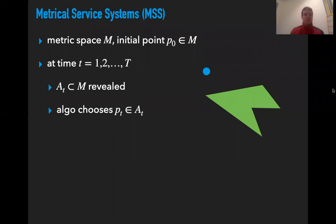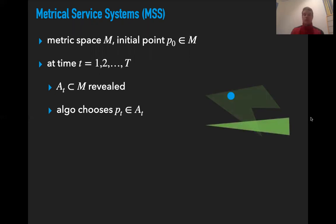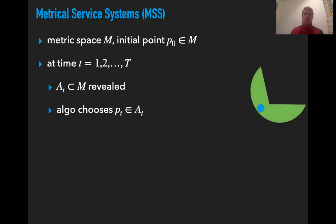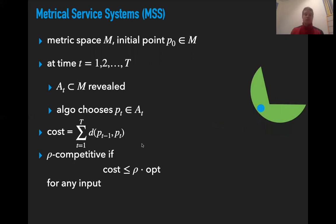In the Metrical Service Systems problem, there's a metric space M and some initial point P0 in this metric space. At each discrete time step, some subset of the metric space is defined as the feasible set. This set, denoted A_T, is revealed at time t, and then the algorithm has to choose a point in this feasible set. So if the green one is the first feasible set, the algorithm's state has to go to this set, then the next feasible set is revealed, the algorithm has to move, and so on.